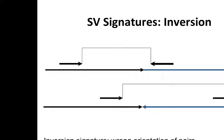Likewise, for an inversion, the donor has a blue segment that was flipped to the opposite sequencing strand. When BWA aligns a pair sampled from the start of the inversion, it has to place that sequence on the opposite strand of the reference, and the pairs end up pointing in the same direction. That's another unique signature of an inversion.